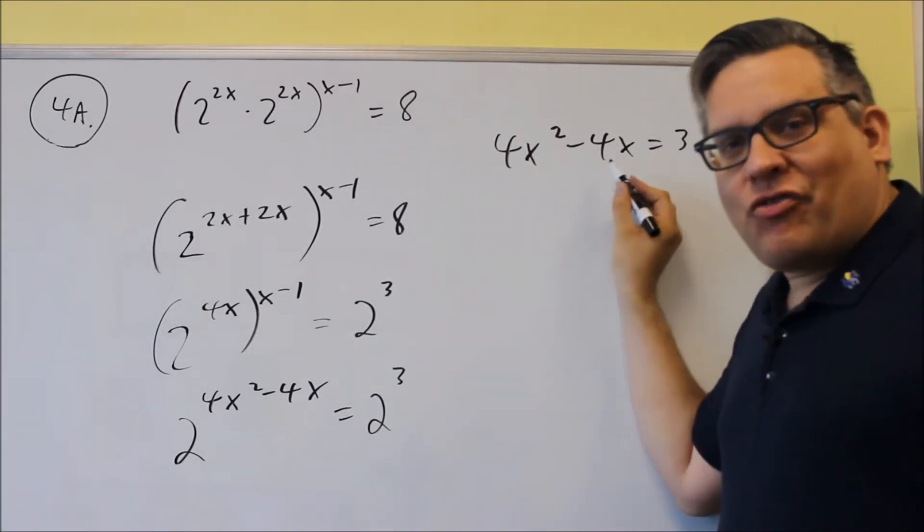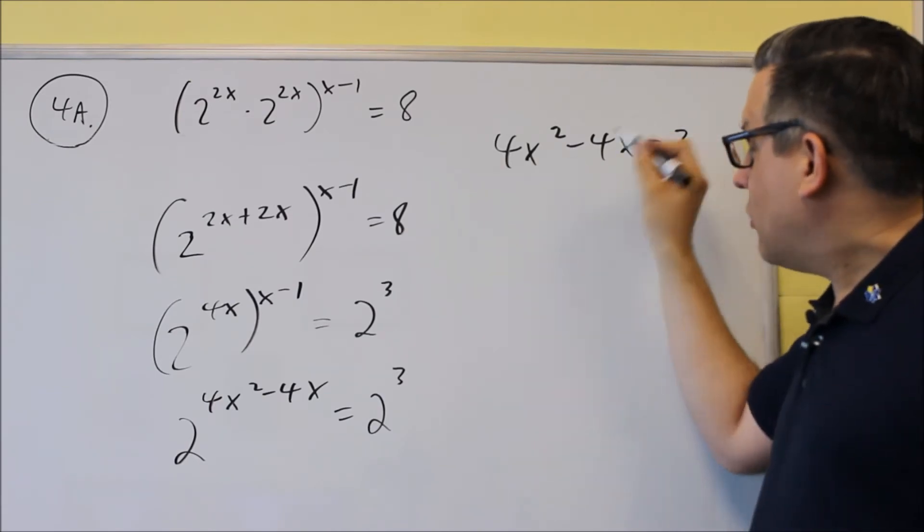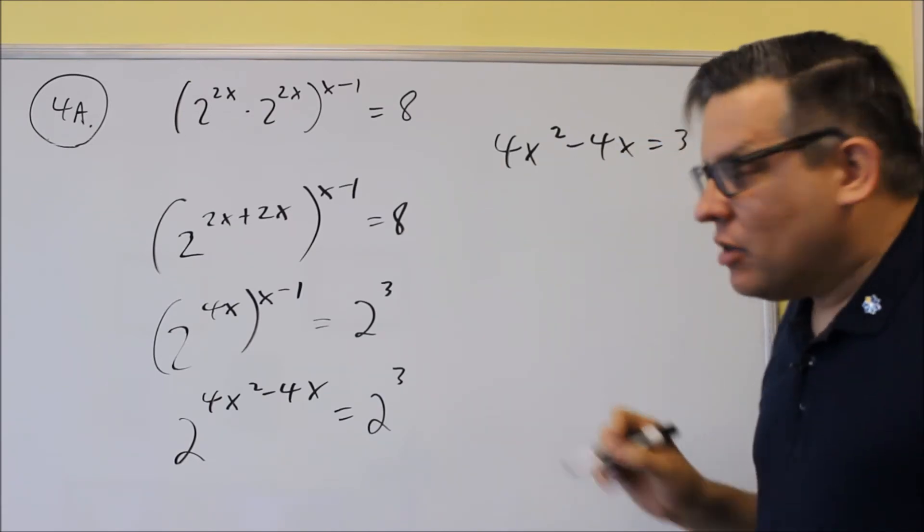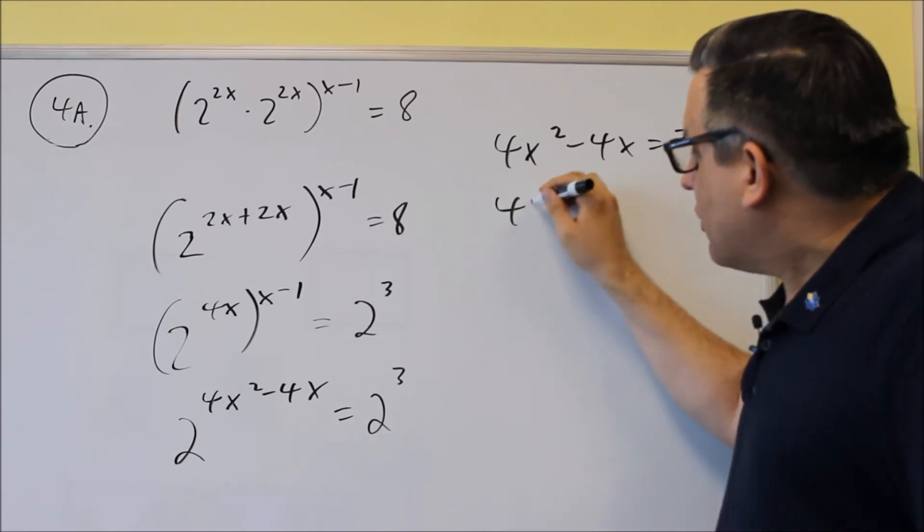Remember that you're not allowed to factor this side and set both of them individually equal to 3. Remember, you've got to get it equal to 0 in order to solve that since it's a quadratic. We have to set it equal to 0.